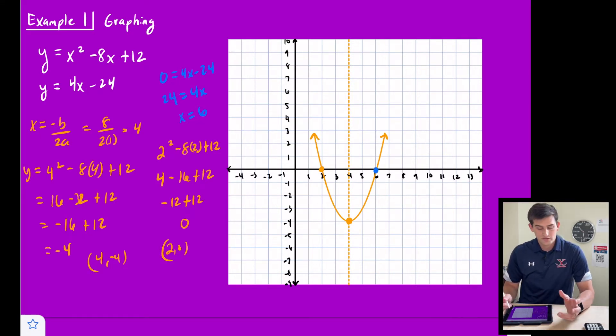And now we can move with our slope. So our slope is 4. So 1, 2, 3, 4, and 1. 1, 2, 3, 4, and 1. And now we could draw our line through these points here.